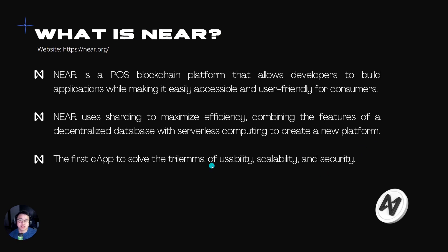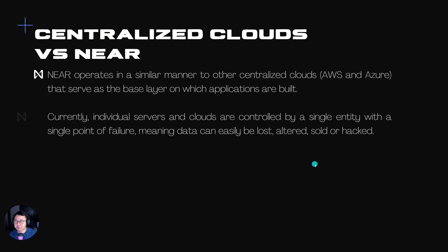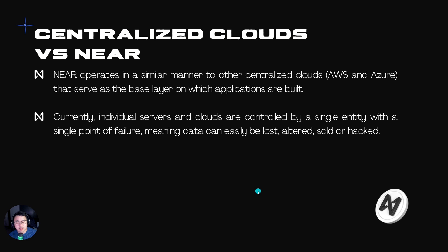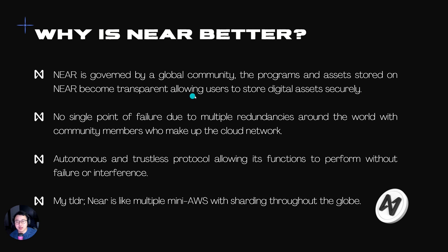So let's explore how NEAR solves the trilemma, because that's a pretty big problem we are facing in crypto right now. NEAR operates in a similar manner compared to centralized cloud such as AWS and Azure. But the problem with centralized cloud is that they are a single entity with a single point of failure. So NEAR does this in a decentralized way governed by a global community, and the programs and assets stored on the NEAR blockchain are transparent and secure. The TLDR is basically: NEAR is like having multiple mini AWS with sharding throughout the globe.